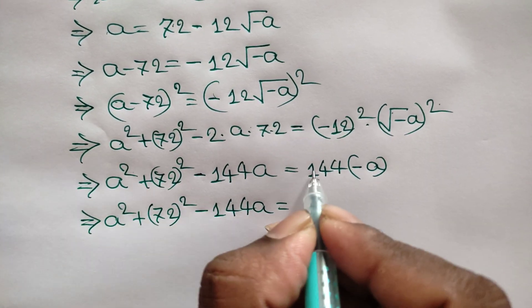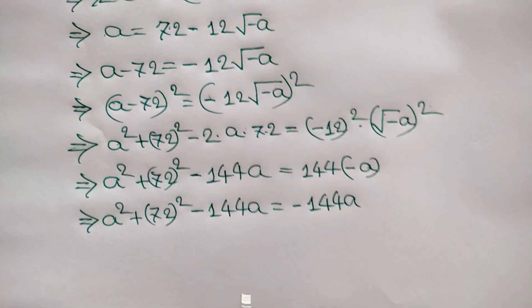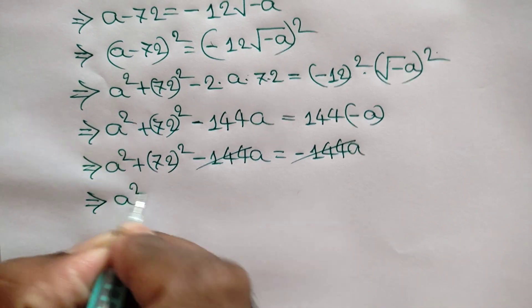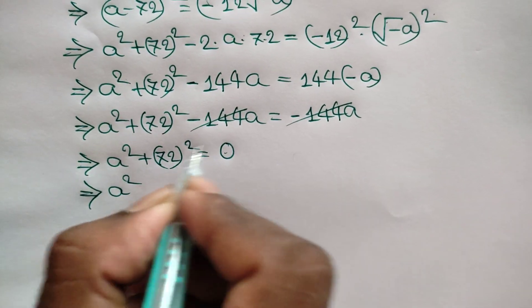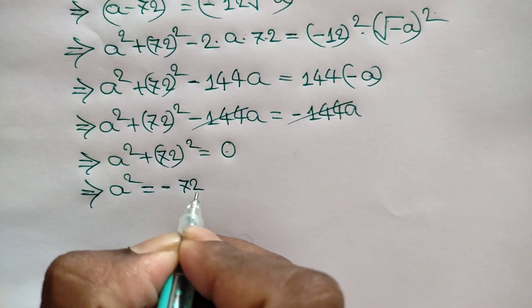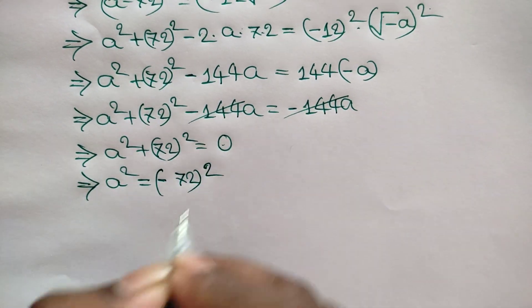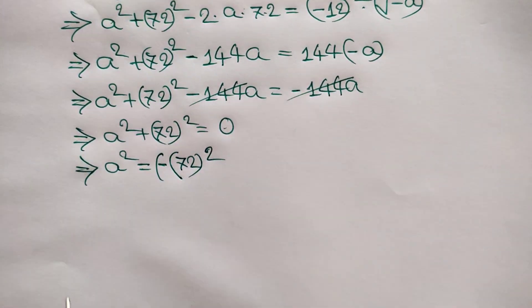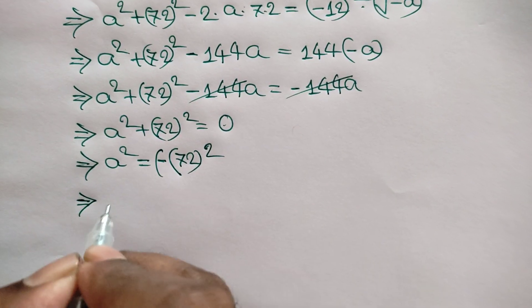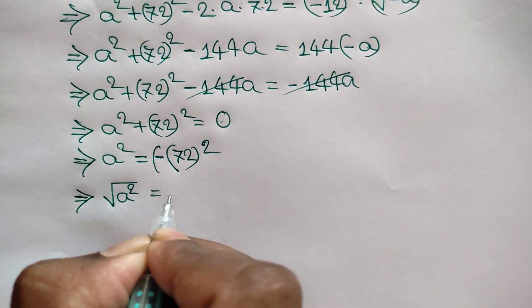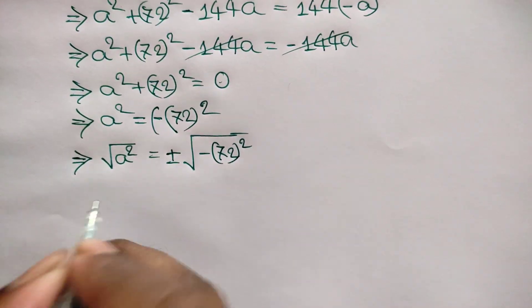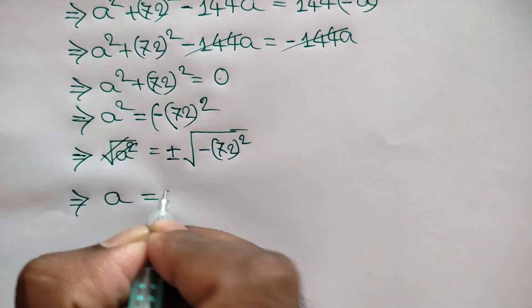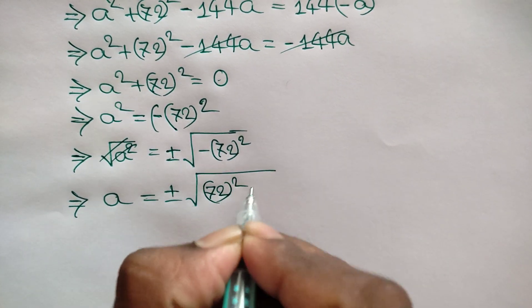So we have a squared plus 72 squared minus 144a equals negative 144a. The 144a terms cancel on both sides, leaving a squared plus 72 squared equals 0. Taking 72 squared to the right side gives a squared equals negative 72 squared. Taking the square root of both sides, we get a equals plus or minus square root of negative 72 squared.